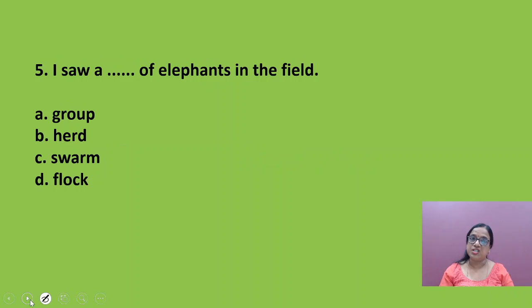I saw a blank of elephants in the field. This is a collective noun. You must learn all these groups, the name used for the groups. I saw a herd. A herd of elephants in the field. So I saw a herd of elephants in the field. So what you use? A group of boys, herd of elephants, swarm of bees. When a group of bees are there then you use a swarm of bees. A flock of cattle. These are the correct collective nouns usage.